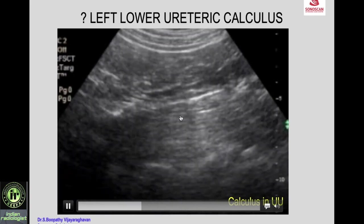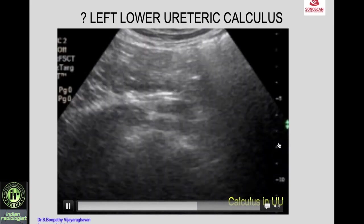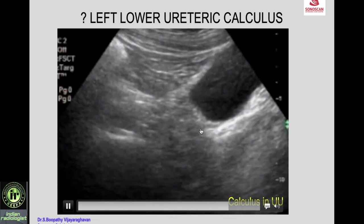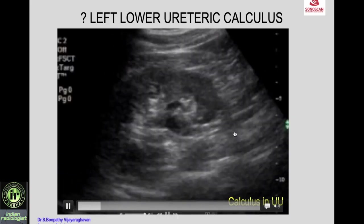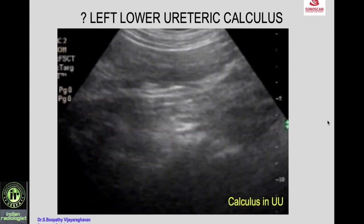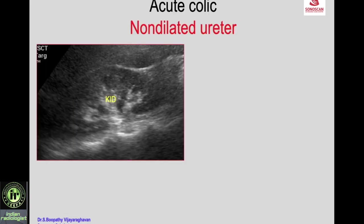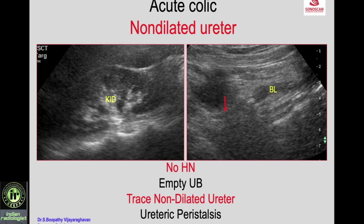In real time: mild hydronephrosis and the calculus here; the mid ureter is not dilated. You go to the lower ureter where you suspect calculus by X-ray — it is normal — so you go back and see it is actually in the upper ureter. You see the ureter and the calculus in the upper ureter, not in the lower ureter. Ultrasound can look for calculus in the non-dilated ureter. The patient presenting with acute colic with no hydronephrosis, non-dilated ureter, and empty bladder — you can trace the non-dilated ureter because of ureteric peristalsis and see the calculus at the ureterovesical junction.